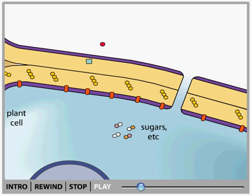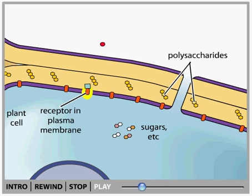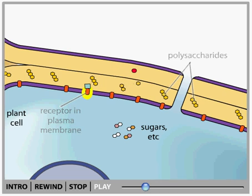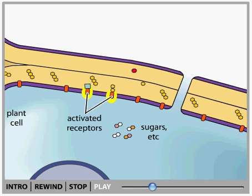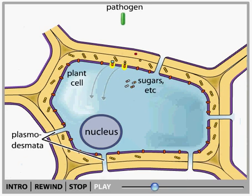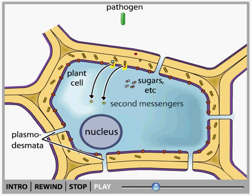Some pathogen molecules, for example, bind directly to plant receptors in the plasma membrane. Others, such as enzymes, break down molecules within the plant cell wall, and then these broken-down products bind to plant receptors. When molecules bind to the plant receptors, these receptors become activated and trigger a cascade of reactions. These reactions lead to the production of second messengers — molecules that migrate through the cell and induce it to respond.